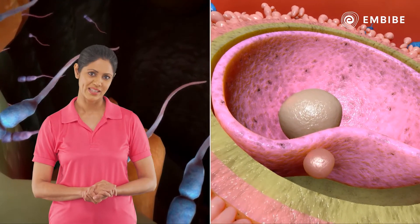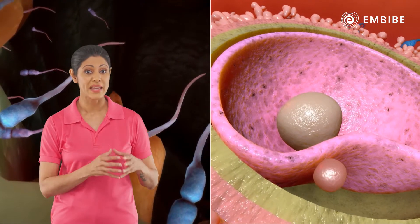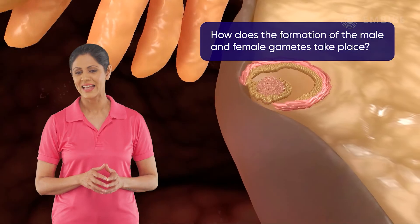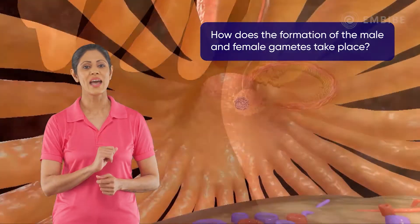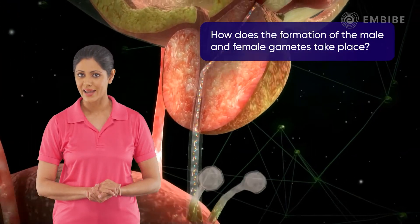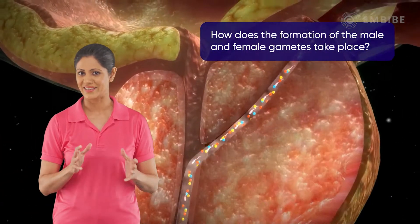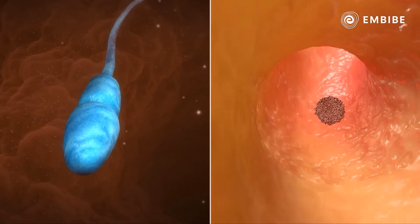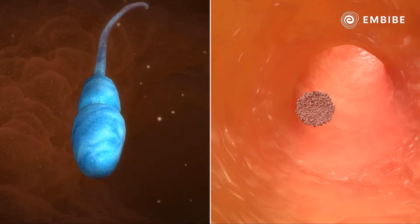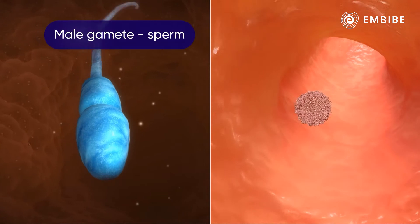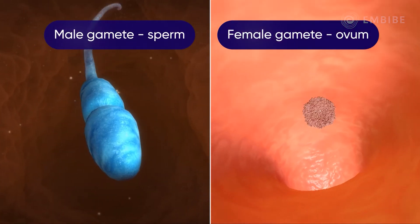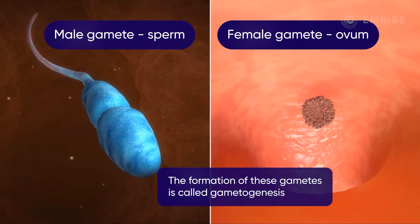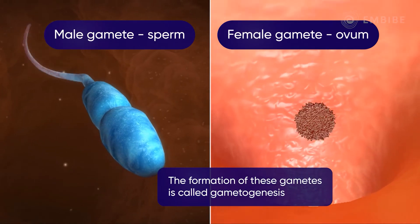We must explore the science behind the male and female reproductive system, but first let's take a look at how the sperms and eggs are made. In the male and female reproductive system, the respective gamete cells — sperm and ovum — are formed. The formation of these gametes is called gametogenesis.